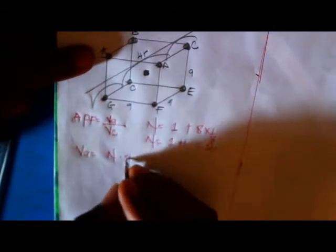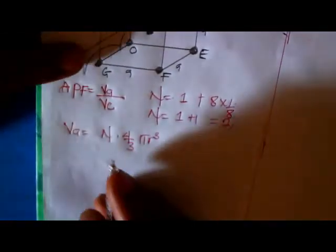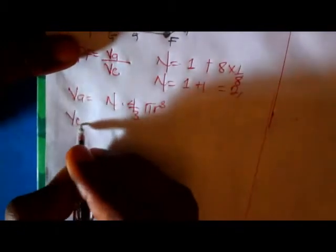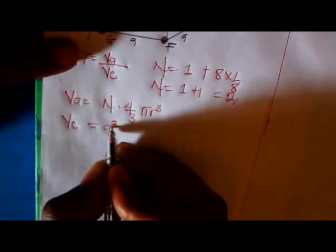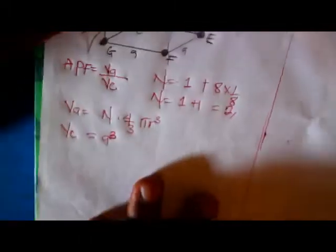Then our N is equivalent to one plus one, which is equal to two. So our volume of atoms will be N times four over three pi R cubed. The atom is like a sphere, and the volume of sphere is four over three pi R cubed. Volume of cubic cell is A cubed. So how can you get the relationship between A and R? That is our mission.